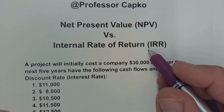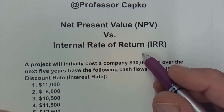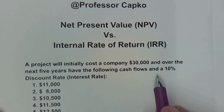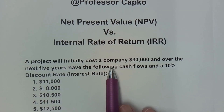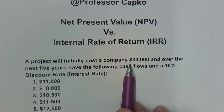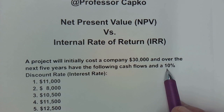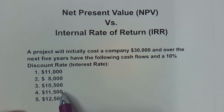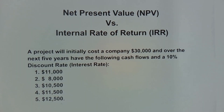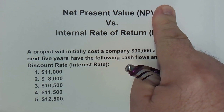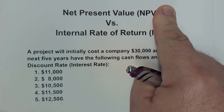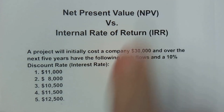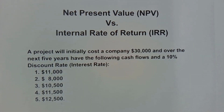In a prior video we calculated the net present value for this particular project. The project initially cost $30,000 and we had an interest rate — otherwise known as a discount rate — of 10%, and then it had positive cash flows over the next five years of these amounts. These are the expected or projected cash flows, and we calculated that in a prior video without a financial calculator, which is linked above.